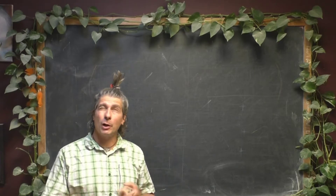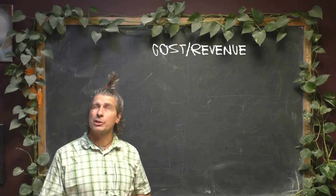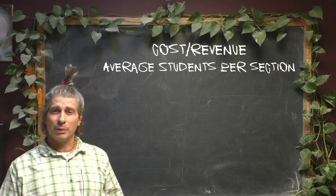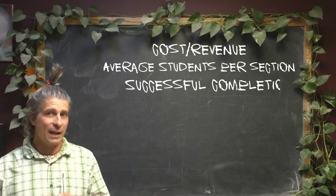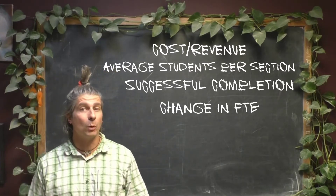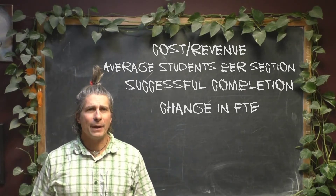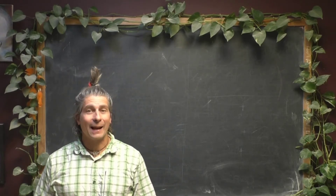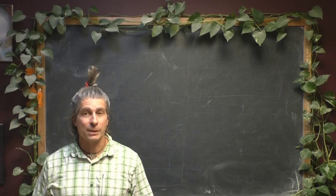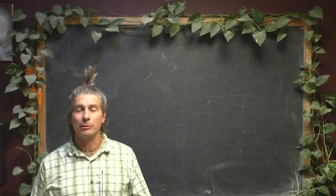which are cost over revenue, average students per section, successful completion, and change in FTE. I want to chat through each one in its own little series of videos, and also share the concerns that I have moving forward with these measures, based on the math that they're actually representing.